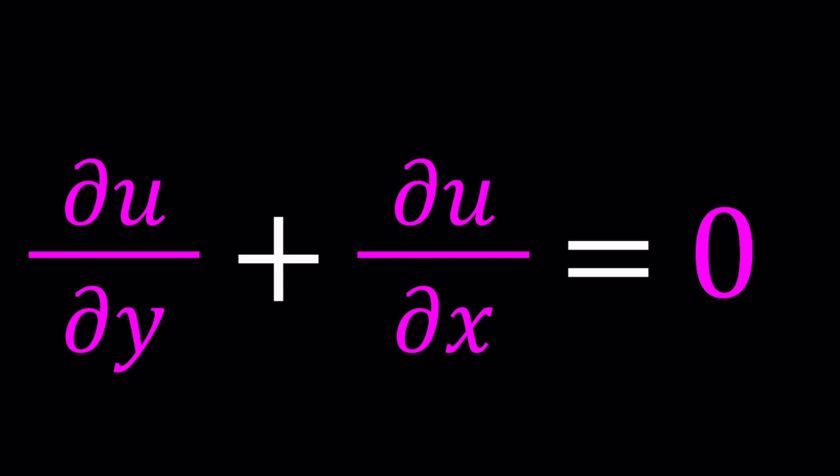Partial derivatives means, for example, when you're doing it with respect to y, you treat x as a constant and vice versa. So we're going to try to find a function such that when we take the partial derivatives with respect to two different variables, their sum is always going to be 0. We'll explore that in a couple different ways, and at the end we can substitute and check our work. Let me present two methods.